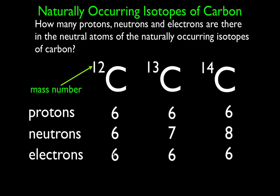Now, these are neutral atoms. The protons are positive and the electrons are negative. If we want the atom to be neutral, then they're all going to have six electrons also. So you should be able to make a little table: if you're given the element and the mass number, you should be able to figure out how many protons, how many neutrons, and how many electrons there are in the neutral atoms of those isotopes.